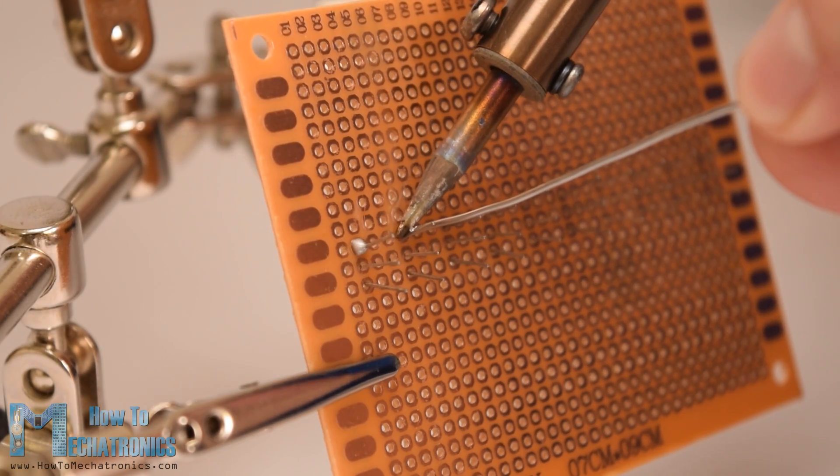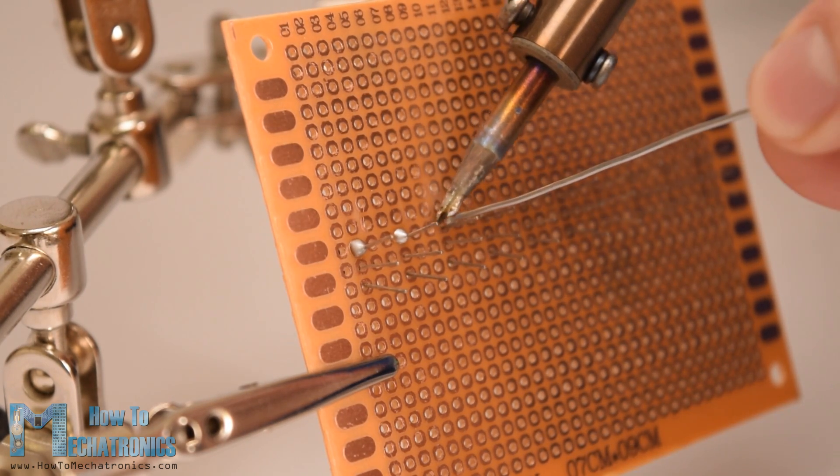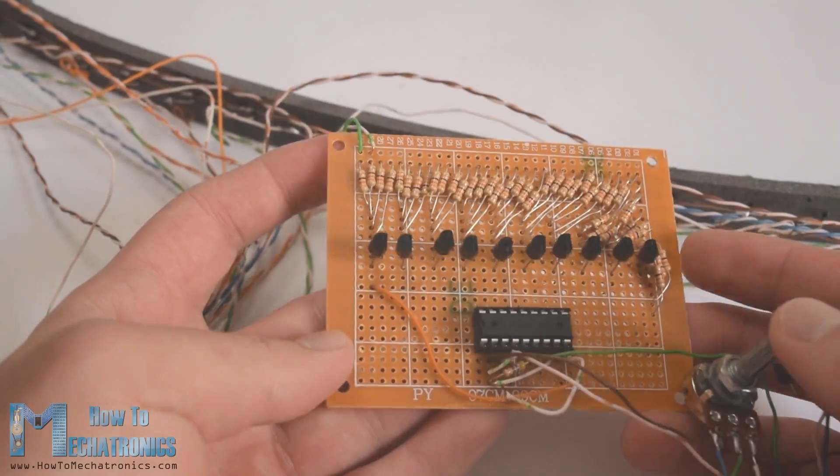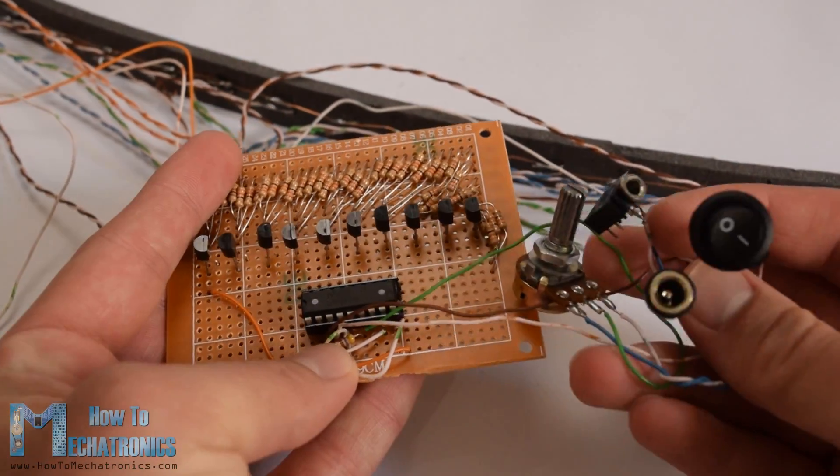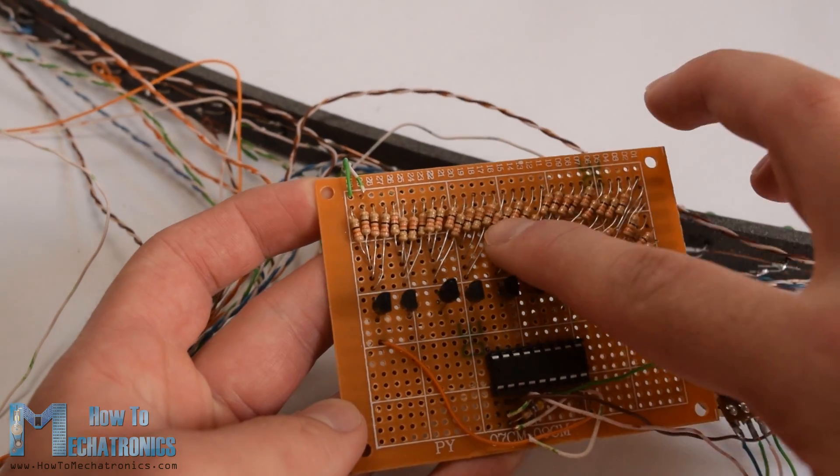Next we need to solder all electronics components as described in the circuit diagram previously. Once we are done with that we also need to solder all wires coming from the LEDs to the circuit board.